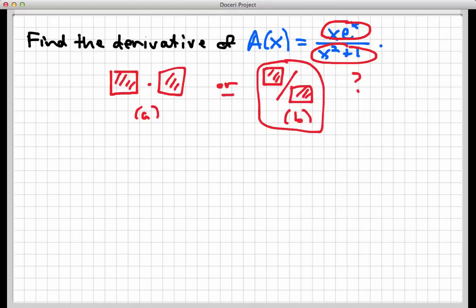It could be rewritten as a product if we wanted to. I could rewrite this as, say, x times the function e to the x over x squared plus 1. So I can make this look like a product. But the way that it's written here, the way that it's given to us, it really looks more like a quotient than anything else. So based on the fact that this function is really a quotient, when you get down to it, we're going to apply the quotient rule first.